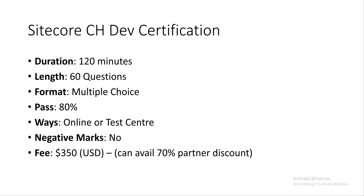The exam is similar in structure to normal Sitecore exams, but has more questions. The duration is 120 minutes — two hours — with 60 multiple-choice questions. There are no negative marks and the passing score is 80%, like all other Sitecore exams. The exam fee is $350.